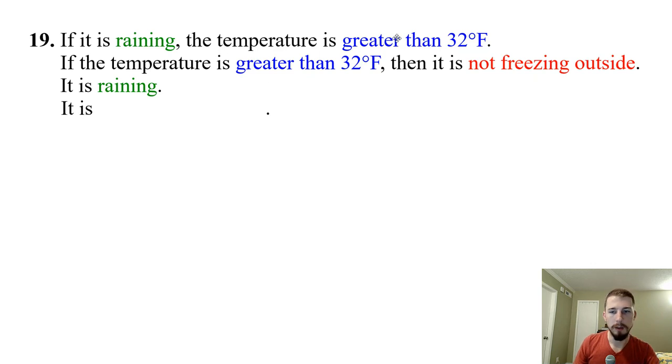If it is raining, the temperature is greater than 32 degrees. If the temperature is greater than 32 degrees, then it's not freezing outside. So we're going from rain to 32, 32 to not freezing. And then they tell us that it's raining. So in this one, we can actually use the law of detachment because we know it's raining. So the first part of our premise is true. And then a chain reaction happens. So it's raining, so it's not 32. If it's not 32, then it's not freezing. So we know that it's not freezing outside because it's raining, which is interesting, using both the law of detachment and the law of syllogism.